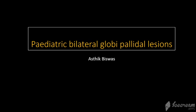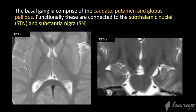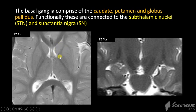Thank you Dr. Bijoy Thomas for inviting me on your channel. Basal ganglia comprise of the putamen, the caudate, and the globus pallidus, and these are functionally connected to the subthalamic nucleus and the substantia nigra.